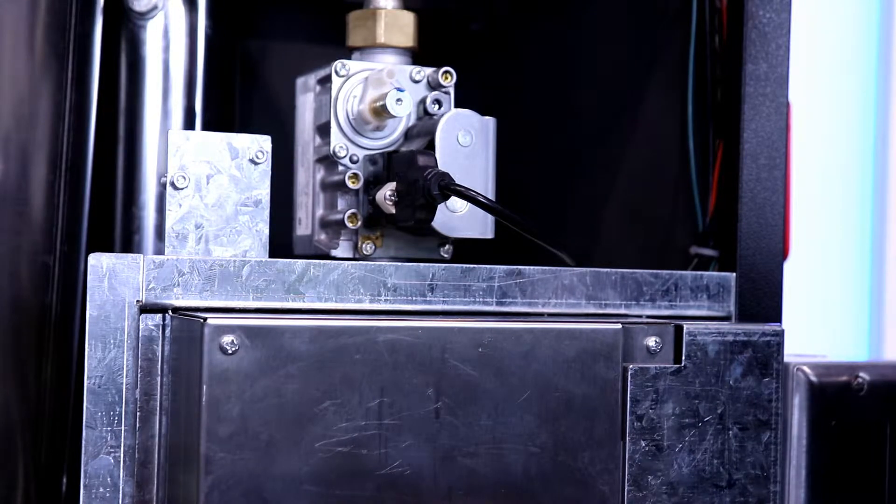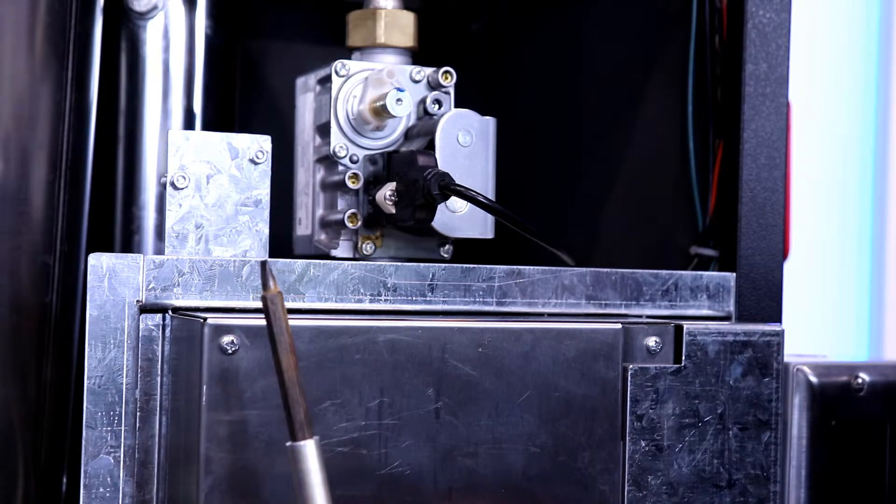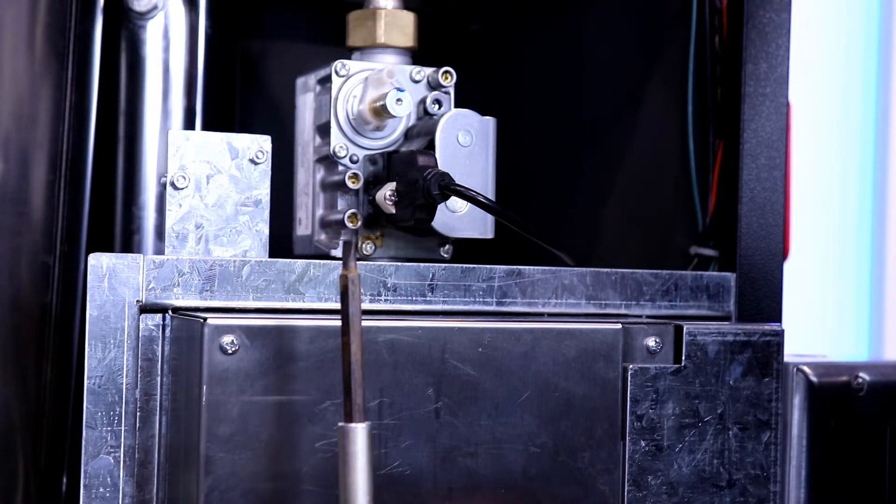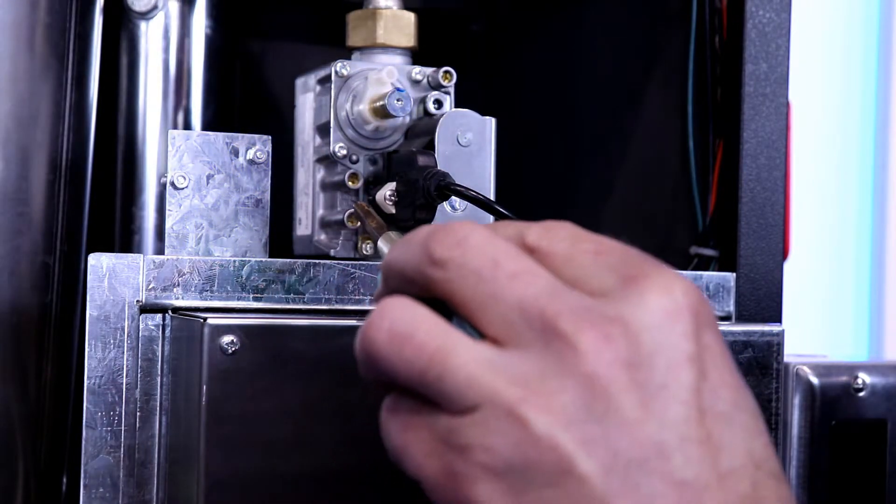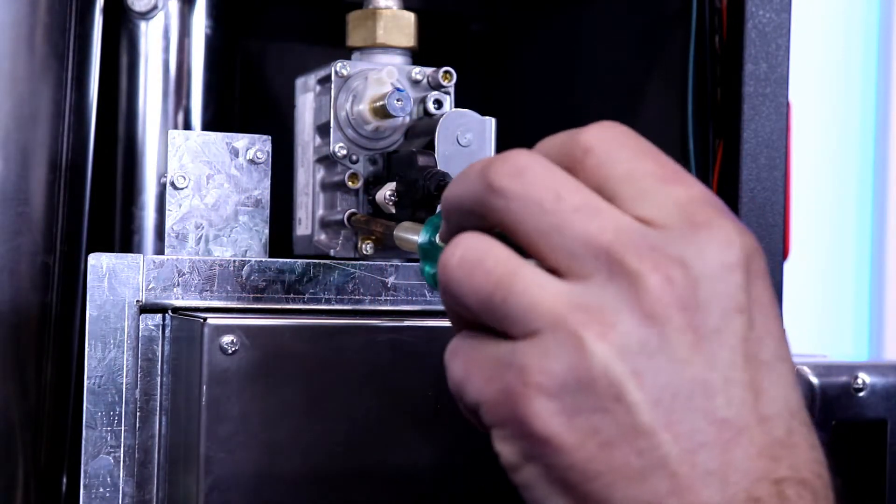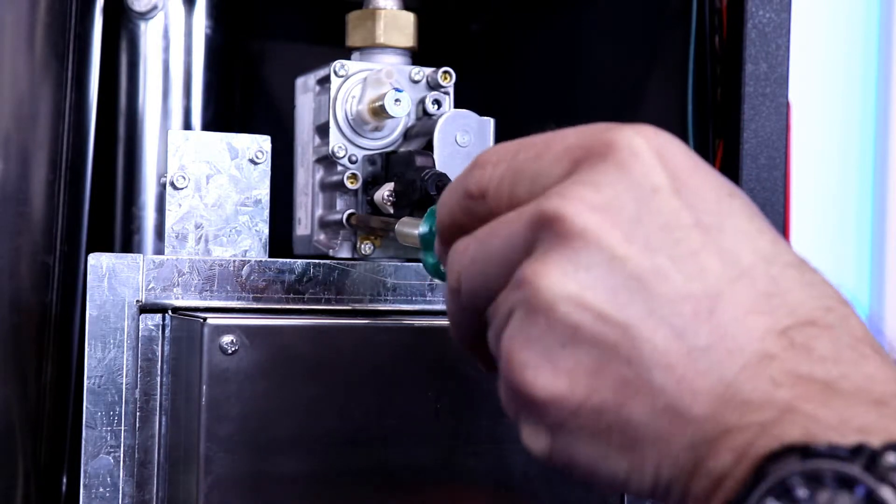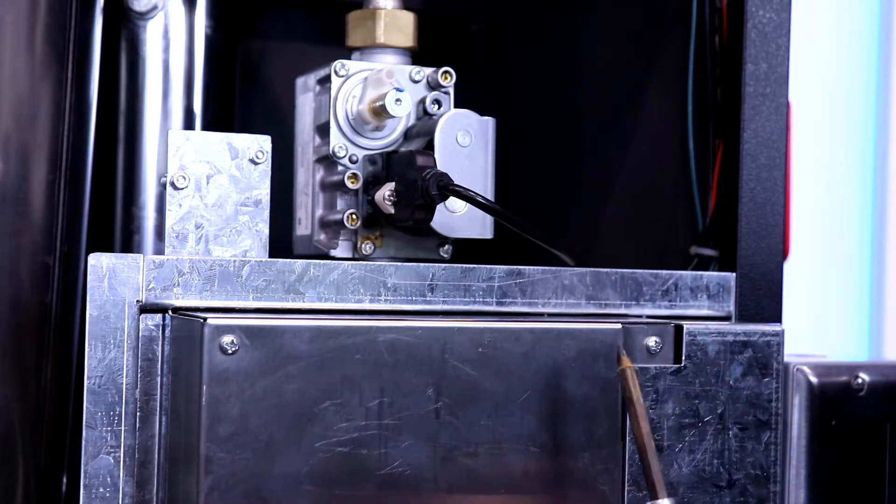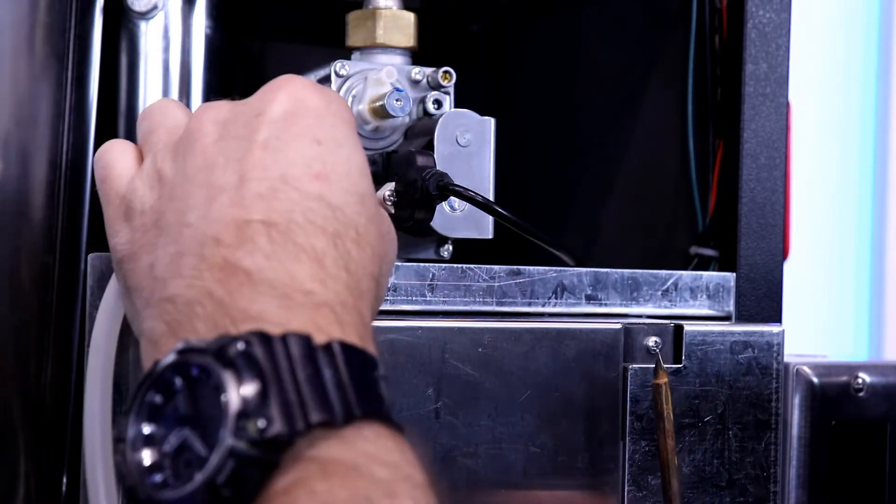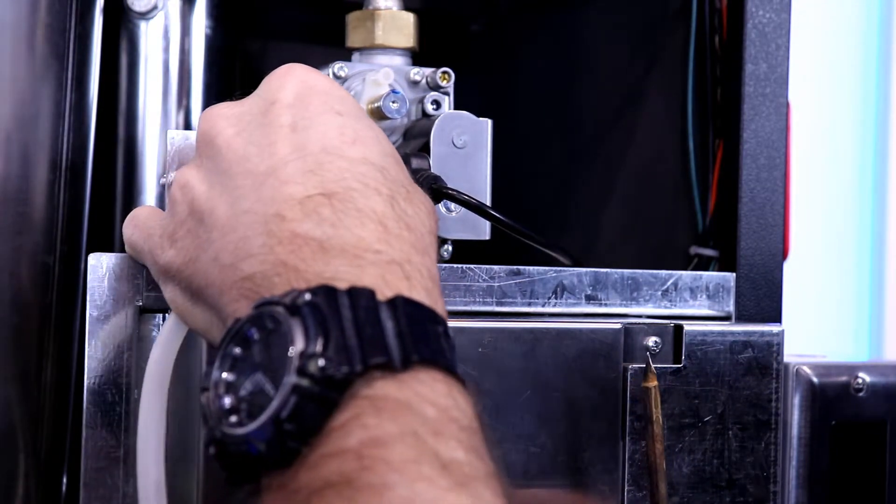we are going to use either a flat blade screwdriver or a T15 Torx to open the set screw inside the gas inlet test port and then attach our manometer pipe to that test port.